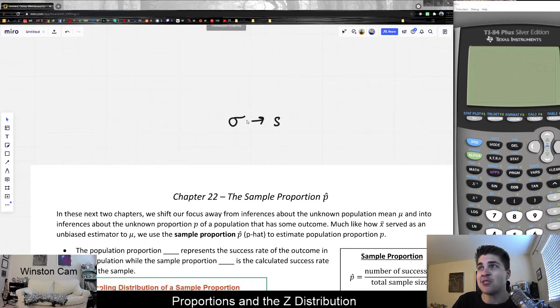We haven't done inferences about sigma. We specifically did inferences about mu in the past all chapters for the second exam. We use x bar as a measurement, which stands for the mean of the sample, as an estimate, an unbiased estimator to the population mean.